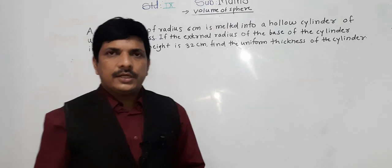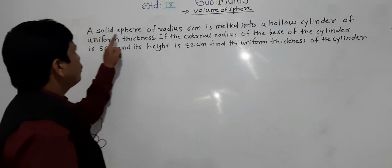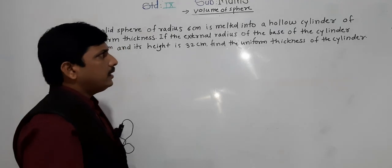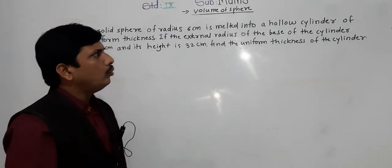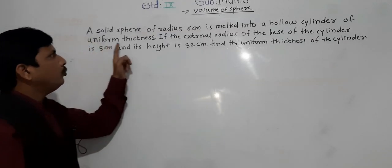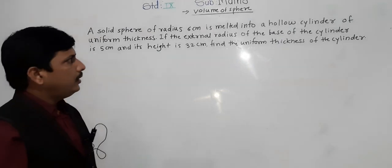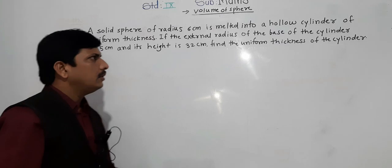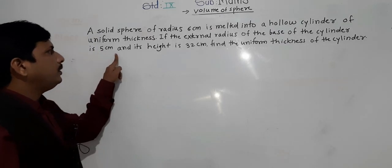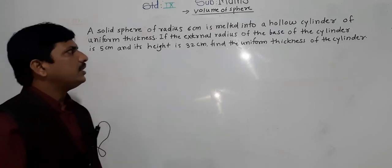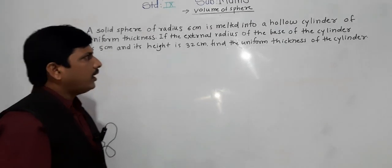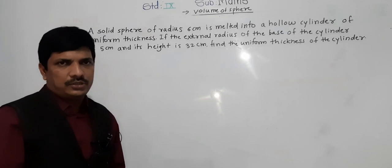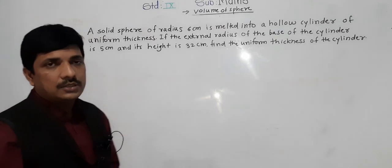Our second problem: a solid sphere of radius 6 centimeter is melted into a hollow cylinder of uniform thickness. If the external radius of the base of the cylinder is 5 centimeter and its height is 32 centimeter, find the uniform thickness of the cylinder.